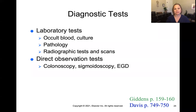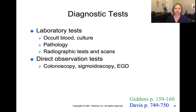There are lab tests that can be done on stool samples. An occult blood test tests for the presence of blood in the stool that may not be visible to the naked eye. You can also culture it to see what bacteria or pathogens are growing in the stool. Pathology involves taking small samples of intestinal tissue to check for things like cancer. Direct observation tests like colonoscopy, sigmoidoscopy, or EGD are performed in the GI lab to directly visualize the GI tract. Radiographic tests and scans like CAT scans and x-rays can also show different components of the bowel system.